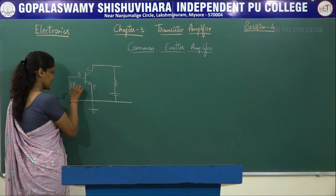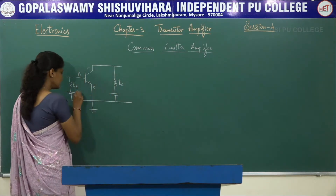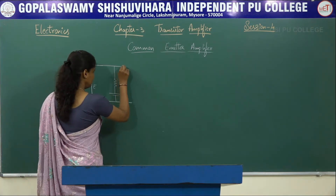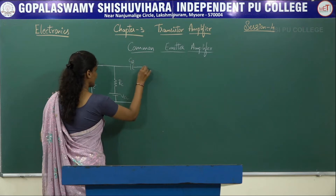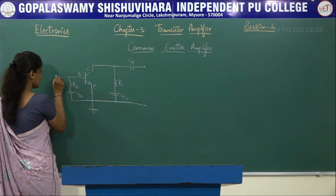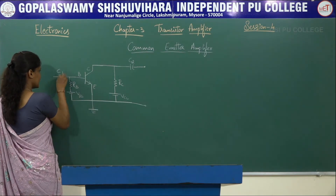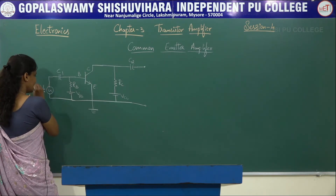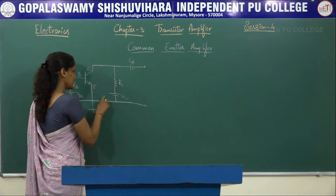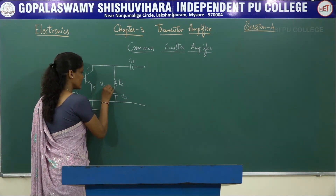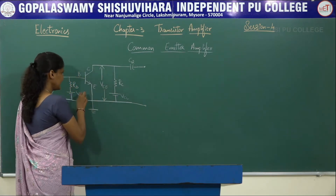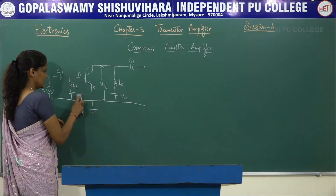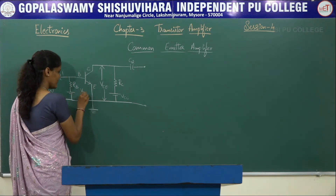Let us call these resistors Rb and Rc, and the voltage sources Vbb and Vcc. Here we are going to use coupling capacitors C1 and C2. The input signal which is to be amplified will be applied here — let us call that Vs. The voltage measured between the collector and emitter terminals will be named Vce, and the voltage measured between the base and emitter terminals will be named Vbe.